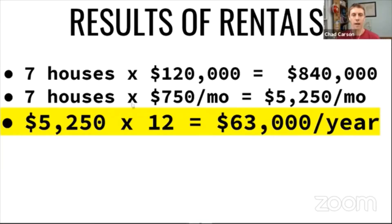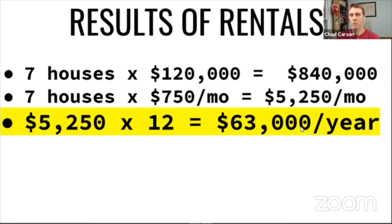Now that they're paid off, you have seven houses times $750 per month, which equals $5,250 per month. That's $1,250 in rent minus all the taxes, insurance, maintenance, and everything else — your net operating income on each rental. Since you don't have a mortgage payment anymore, you keep all of it. Total: $5,250 per month times 12 gives you $63,000 per year.